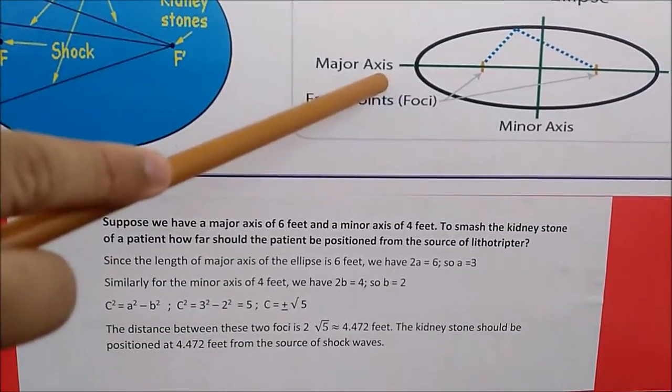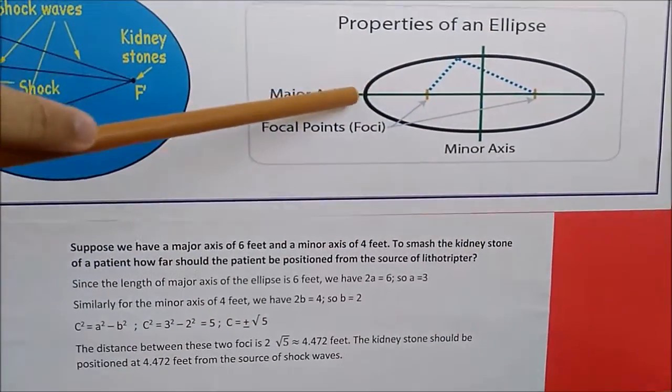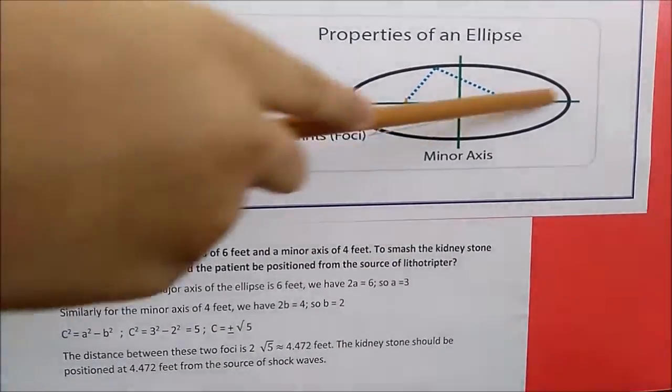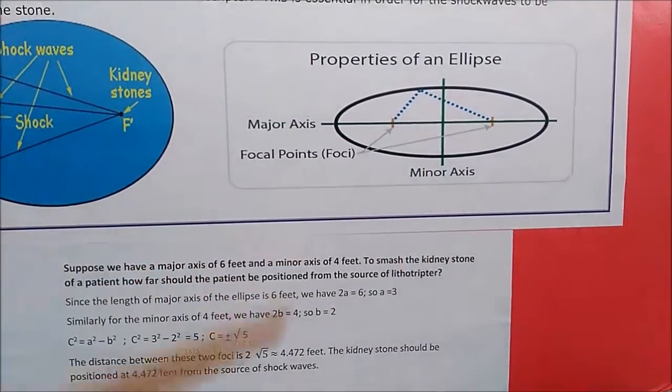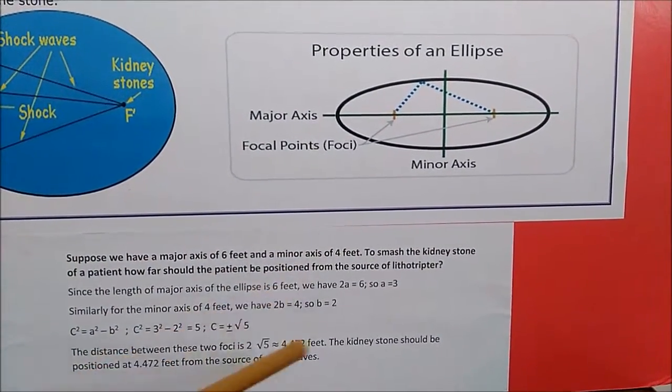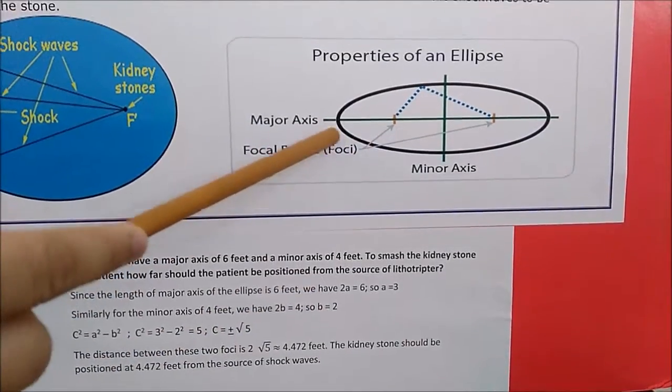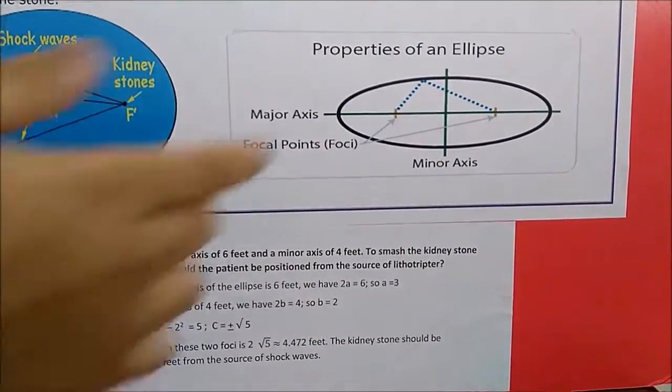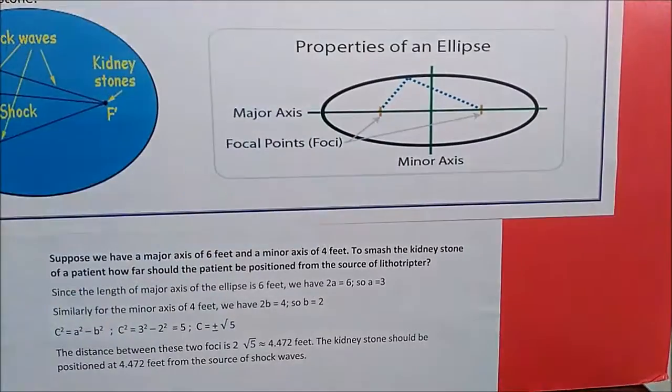So now as we see here, suppose the major axis is 6 feet. So we can understand that 2a is equal to 6, so a is equal to 3. So the distance from this to this is equal to 3.